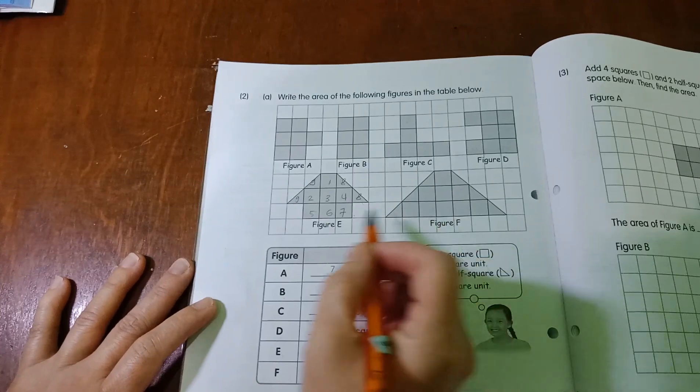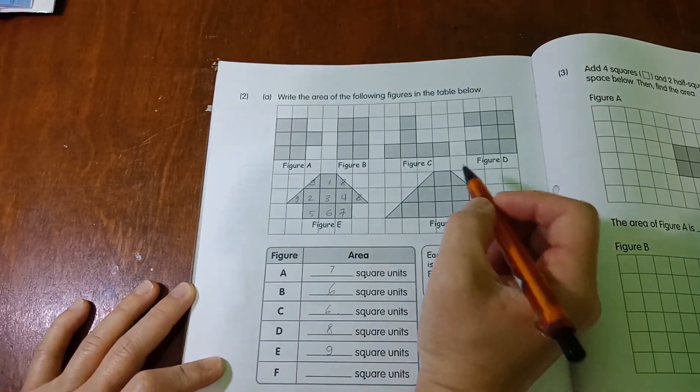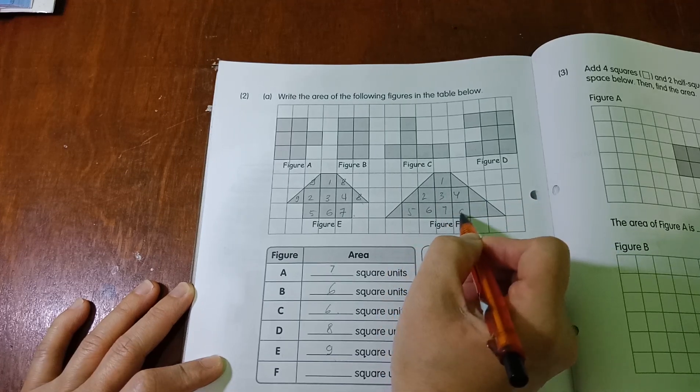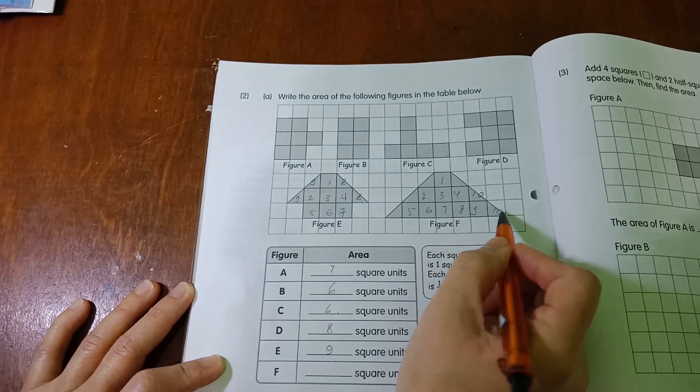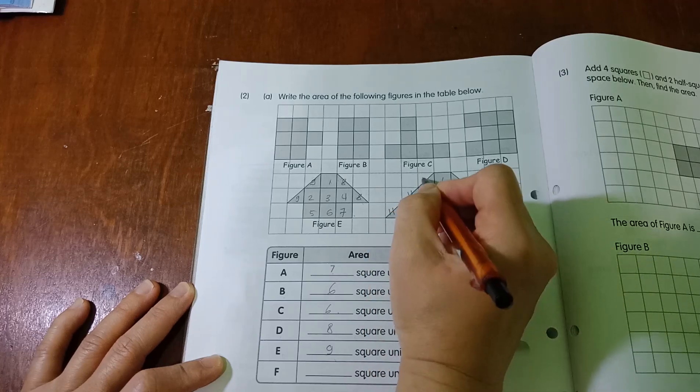What about F? F should be the same counting as figure E. Let's count the whole unit first. 1, 2, 3, 4, 5, 6, 7, 8, 9, 10. 10 here, and I have 11, 11, and 12.